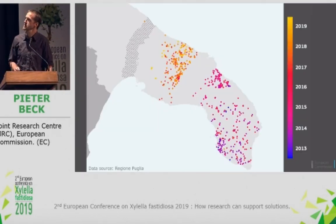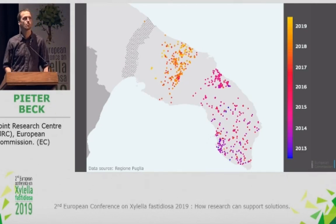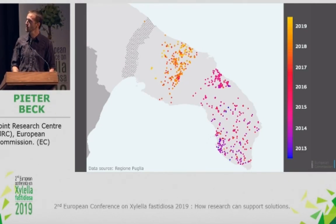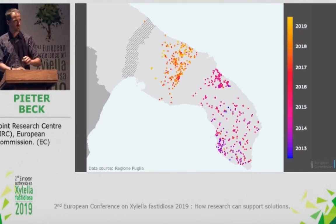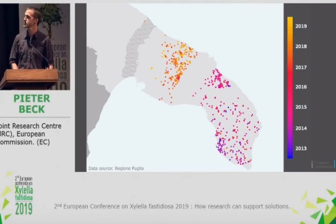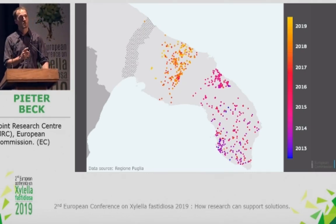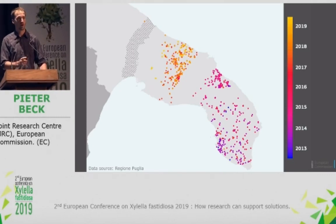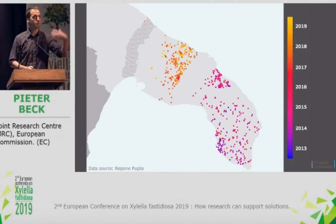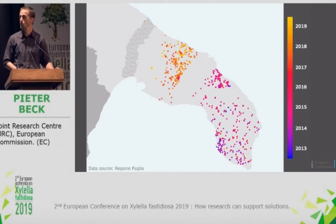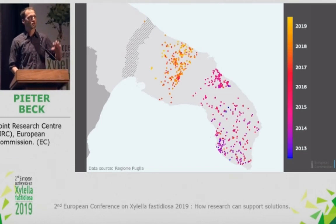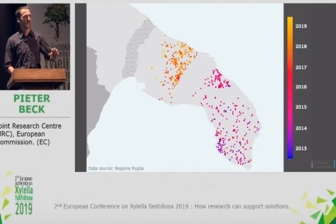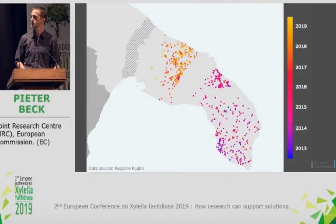This is an image you saw yesterday as well. It's the official monitoring data in Puglia of plants that tested positive for Xylella. I commend the region for making these data available as points rather than just at administrative level, because it's really useful to science. The law requires that these data really focus on establishing the front of the epidemic, which is why areas further south are not being monitored anymore. That means we don't really have a good view on the damage that Xylella has done in those areas that have been infected for longer.